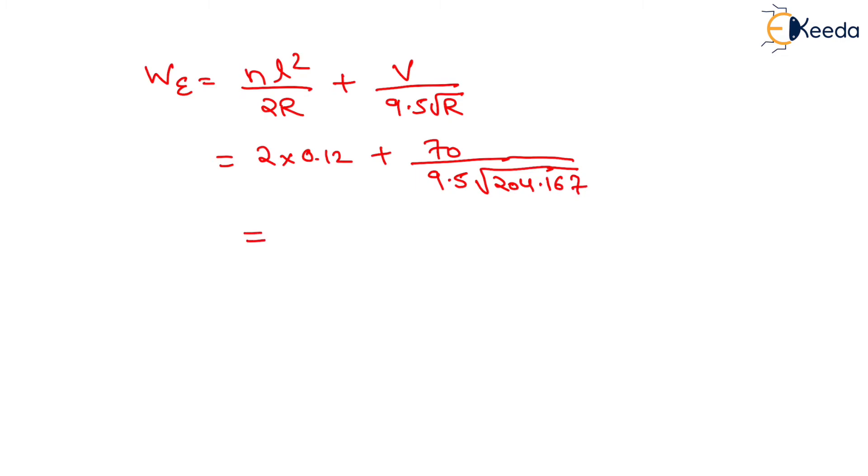Now, on solving this we will get the answer as 0.7557 meters. Approximately, it will be equals to 0.756 meters. That will be the value of extra widening. That is all about this numerical. Thank you students.